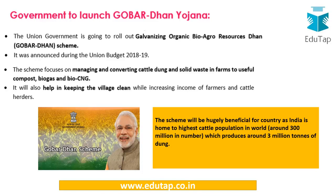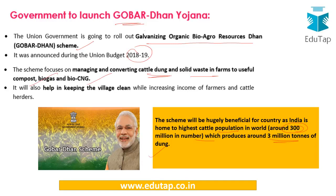Next news: the government is to launch the GOBAR-DHAN Yojana — Galvanizing Organic Bio-Agro Resources Dhan scheme — announced in the Union Budget 2018-19. This yojana is related to managing and converting cattle dung and solid waste from farms into useful compost, biogas, and bio-CNG. India has a very high cattle population of around 300 million, producing approximately 3 million tons of dung every day. Utilizing this dung converts waste into a useful resource while also helping keep villages and surrounding areas clean.